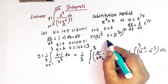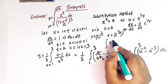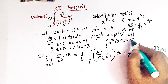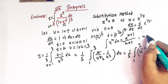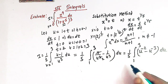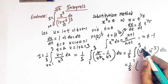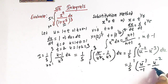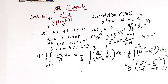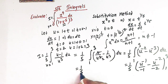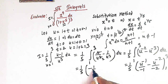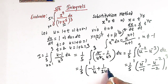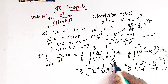Using the power rule for integration — the integral of x raised to n is x raised to n plus 1 over n plus 1, provided n is not equal to minus 1 — we integrate term by term. The integral of u raised to minus 2 gives u raised to minus 1 over minus 1, and the integral of u raised to minus 3 gives u raised to minus 2 over minus 2. Simplifying, we have 1 over 5 times negative 1 over u plus 1 over 2u squared, evaluated from 1 to 3.